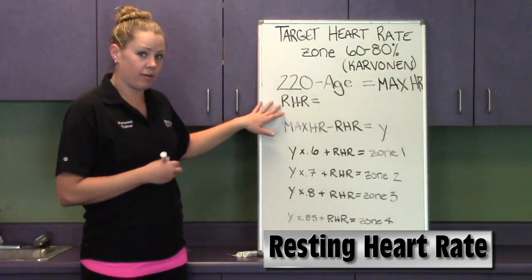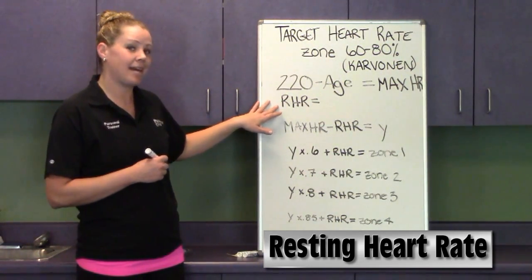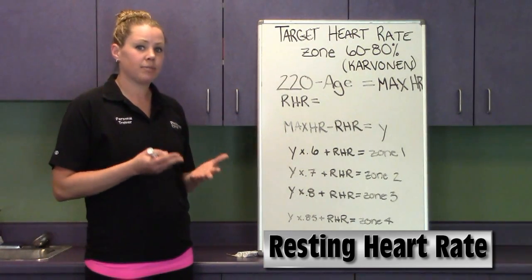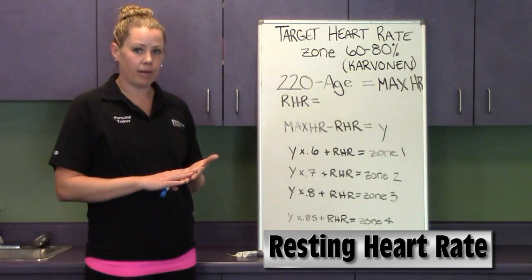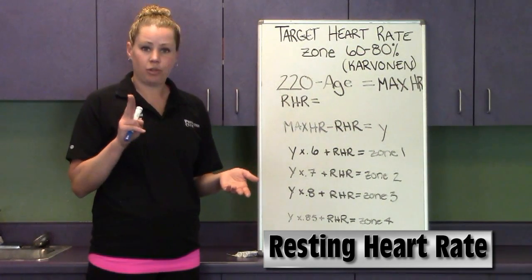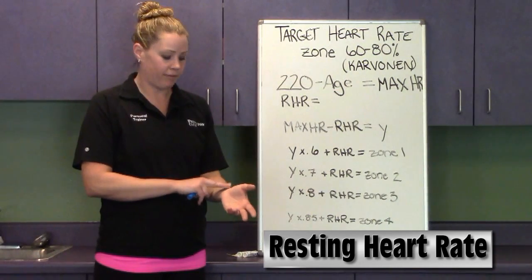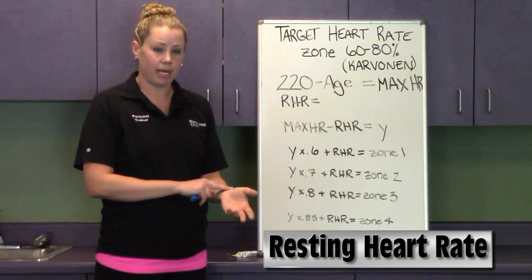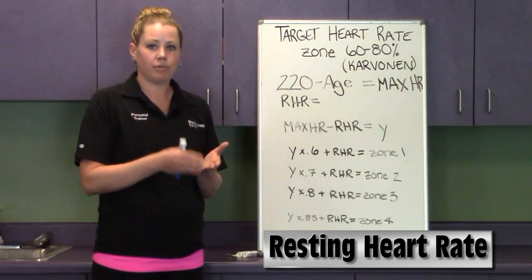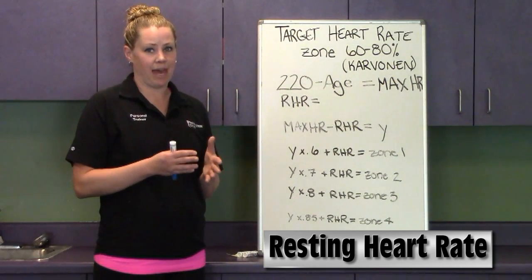To figure out your resting heart rate, you're going to want to do this ahead of time. Usually two to three mornings when you wake up in the morning, take your heart rate right away. Use your two fingers, take it on your thumb side, count for up to a full minute to find out what your resting heart rate is per minute. Do that two or three days in a row and take the average of that number.